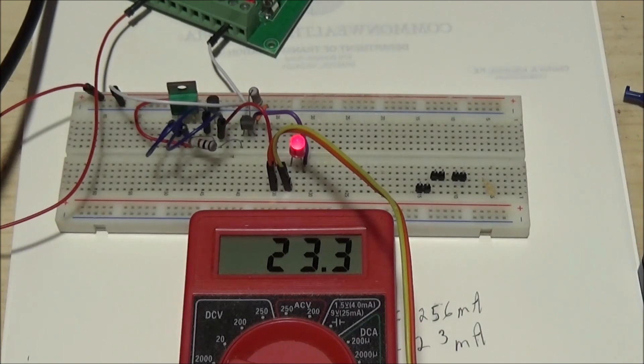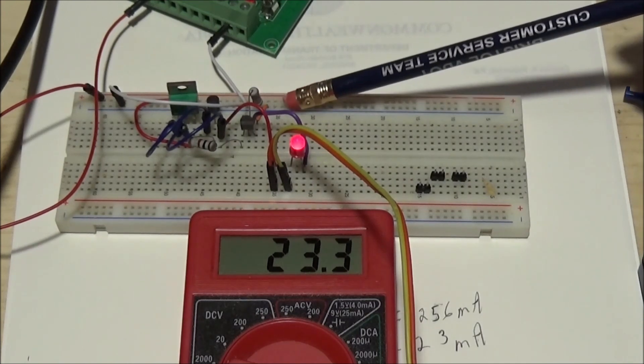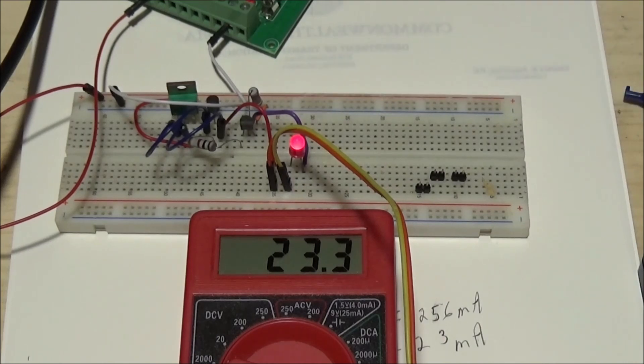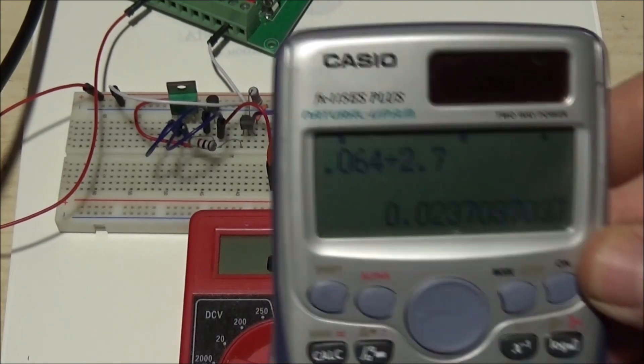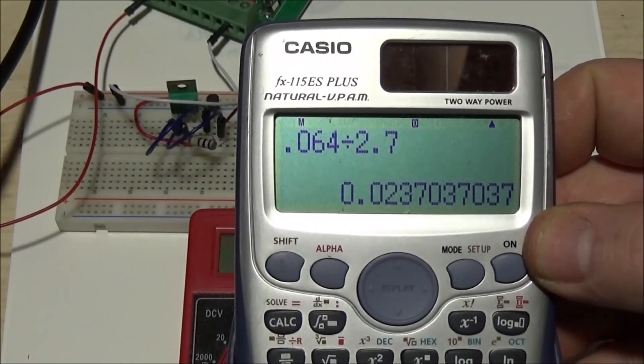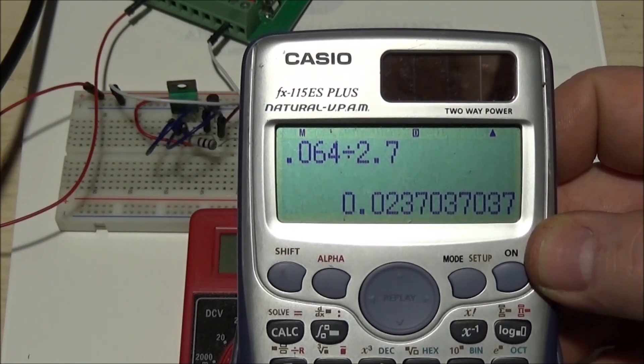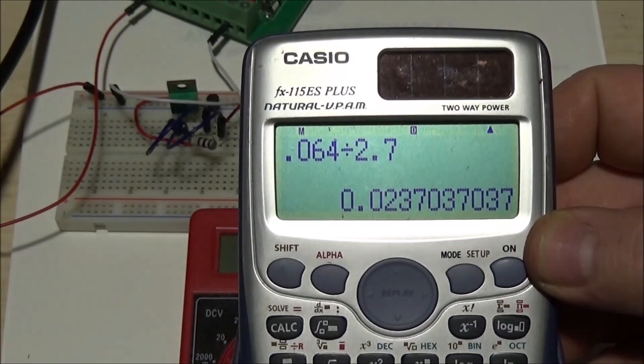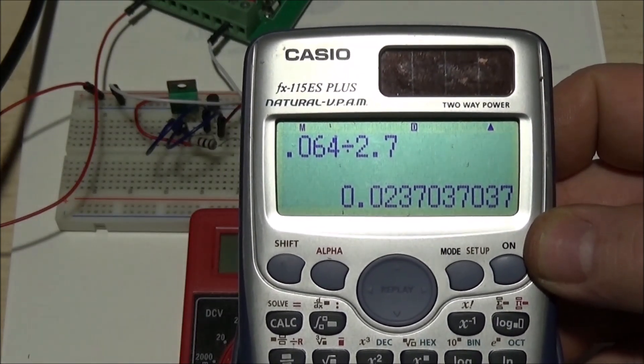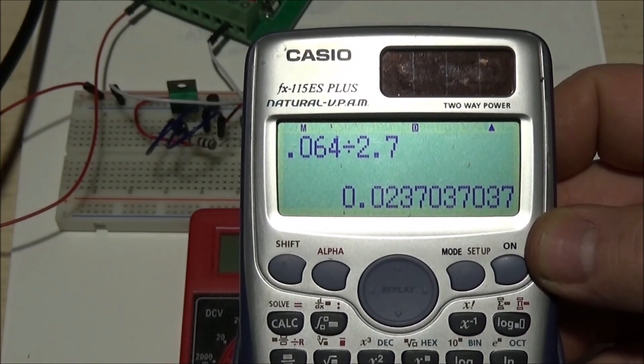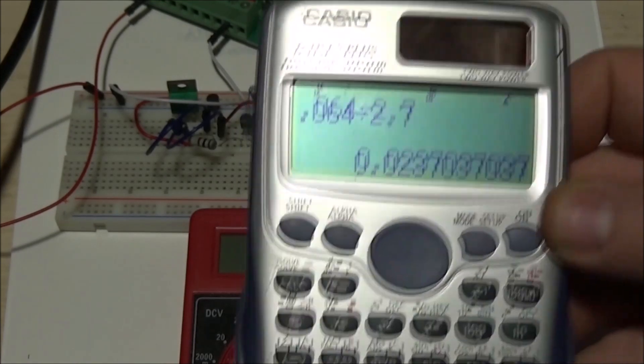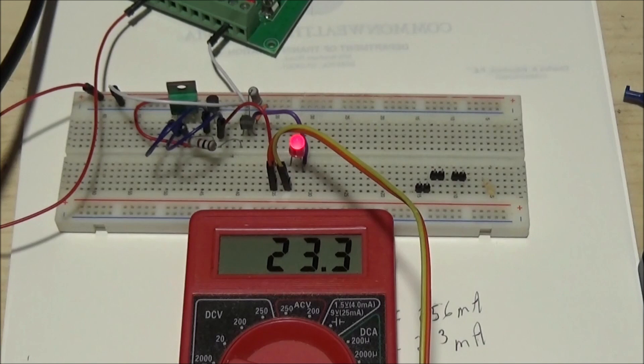How do you determine the current? You have this single resistor over here - it's a 2.7 ohm resistor. The formula is 0.064 divided by that resistor value, which gives you your current at 23.7 milliamps. I'm measuring 23.3 milliamps.